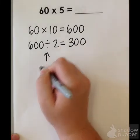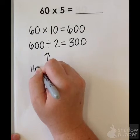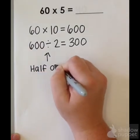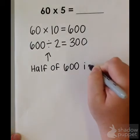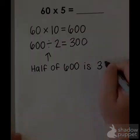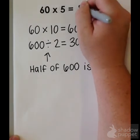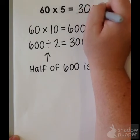600 divided by 2, or 600 split in half, equals 300. So, 60 times 5 equals 300.